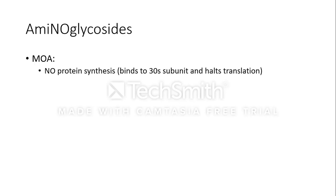Let's talk about the mechanism of action. The first thing you need to know is that aminoglycosides inhibit protein synthesis in bacteria. Aminoglycosides bind to the 30S subunit of the ribosome and stop the translation process. The other mechanism of action is that it needs oxygen to act, meaning aminoglycosides act only on aerobic organisms.